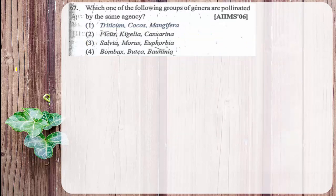The next question: which one of the following groups of genera are pollinated by the same agencies? Pollination is the transfer of pollen grains from anther to stigma. Agents include wind, insects, birds, or mammals. Some plant names are given and we need to find which group shares the same pollinating agency. The answer is option 3.